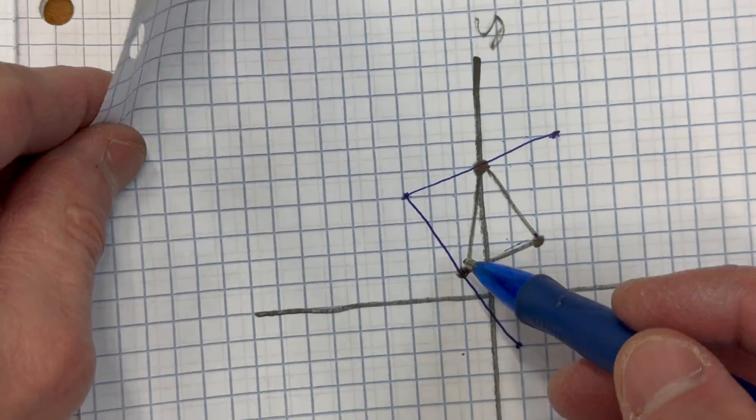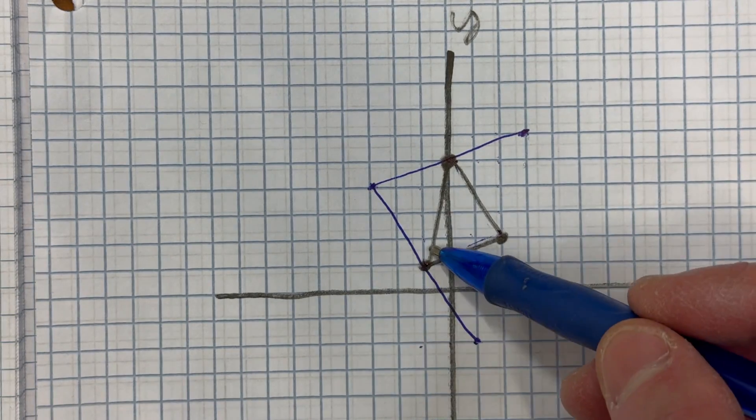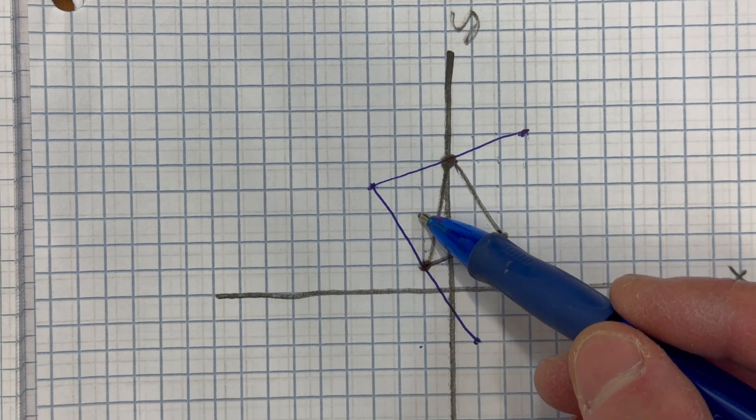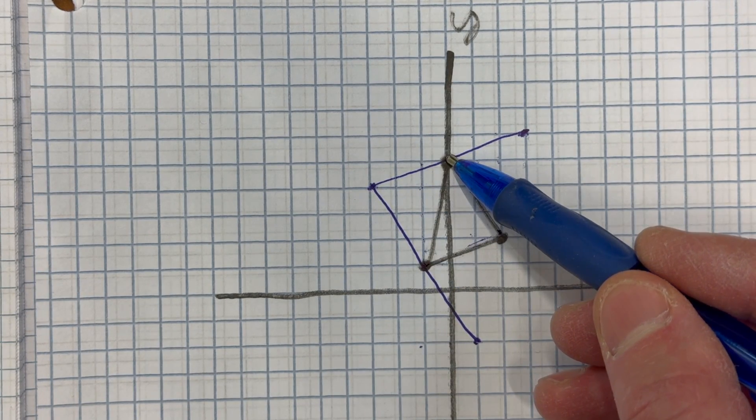And then you could repeat it again. You could say, well, let's look at this mid-segment right here. This has a slope of one, two, three, four, run one.